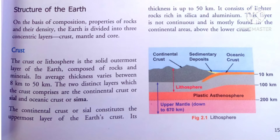In Figure 2.1, this is the lithosphere. The upper mantle extends down to 670 km. The plastic asthenosphere is 200 km. The lithosphere extends from 100 km. The continental crust includes sedimentary deposits, and you can see the oceanic crust here.